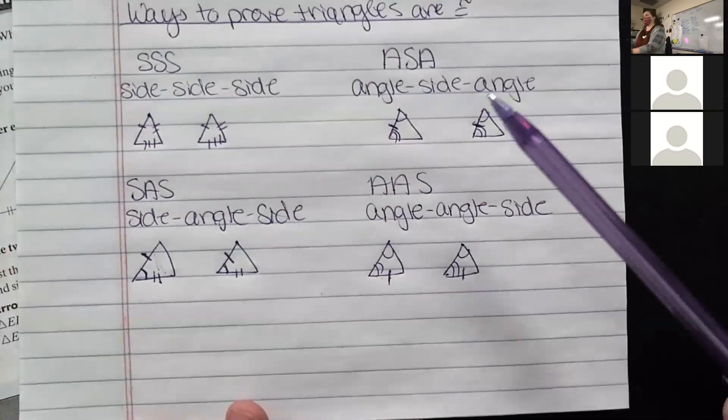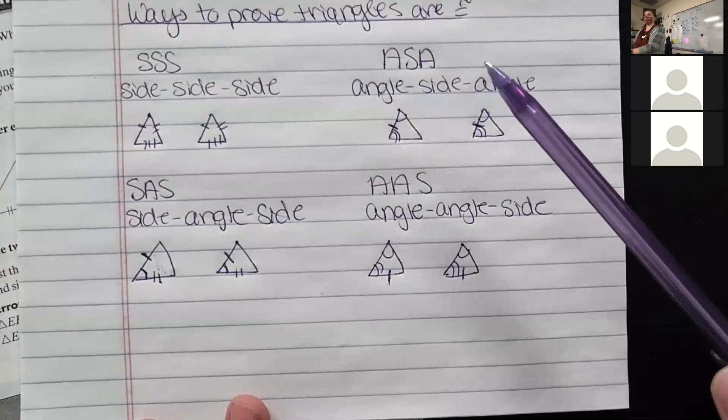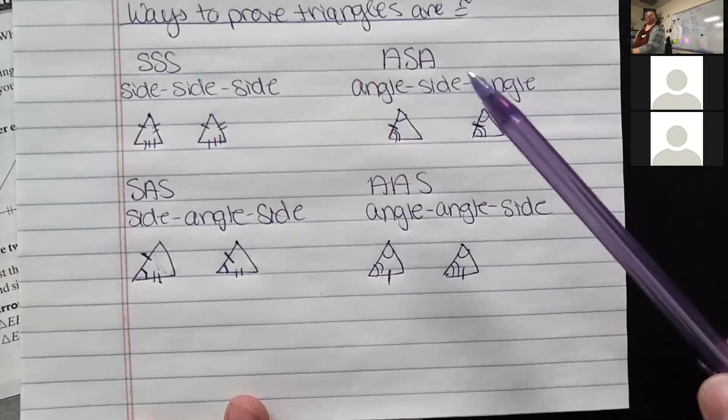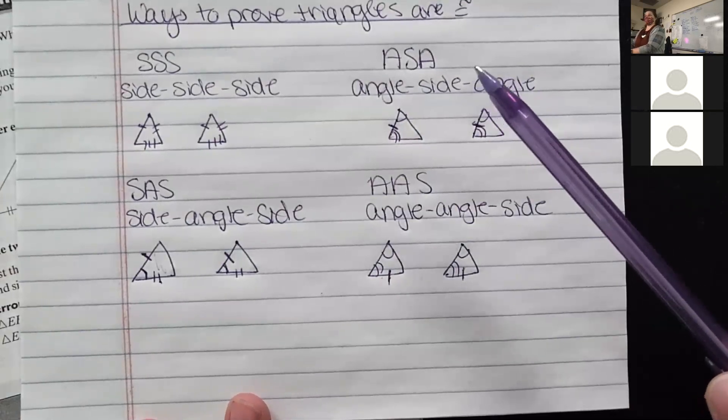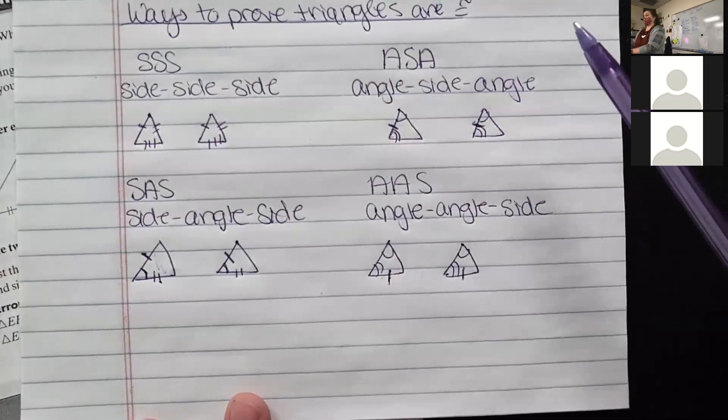But make sure that you don't have an angle-side-side postulate. There's not an angle-side-side postulate, because if you tried to write that out, it would not be a good word. It's something you sit on, not something that's a postulate. Got it? There is no angle-side-side postulate, never has been, never will be.